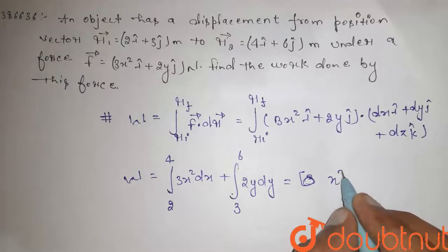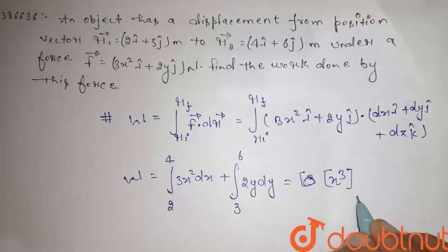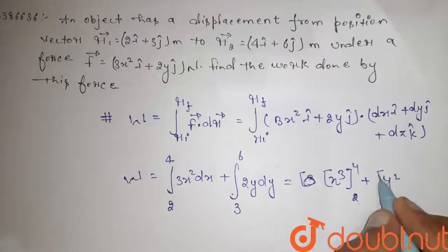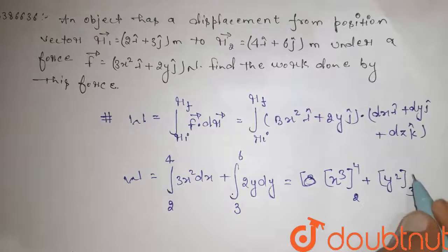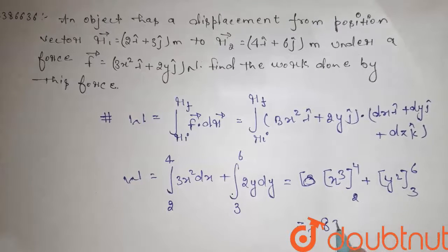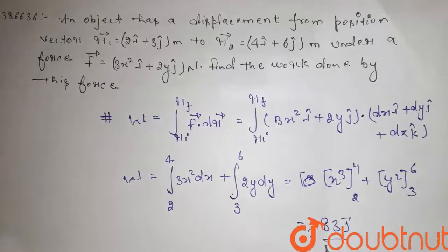The integration is x³ from 2 to 4 plus y² from 3 to 6. The final answer is 83 joules.